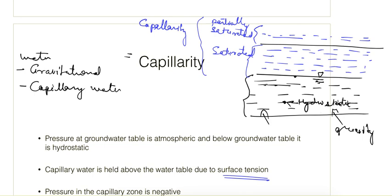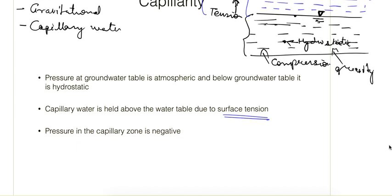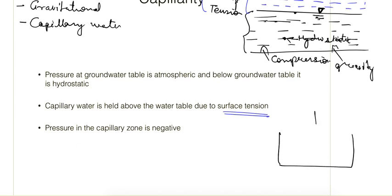In the zone below the water table, water is in compression. Above the water table, water is held by suction and is therefore in tension. So above the water level, water is in tension, and below the water level it is in compression — meaning hydrostatic conditions do not exist in the capillary zone. This can be understood by the glass tube experiment: when a glass tube is inserted in water, the water rises up to a certain distance because of surface tension.